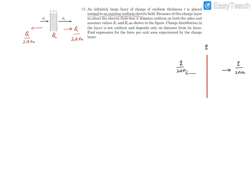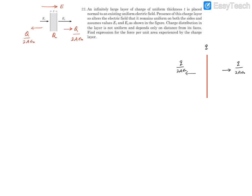There is also an externally existing uniform field, such that the resultant field on both sides comes out to be E2 and E1 respectively. The external uniform field must be directed in this direction. The fields due to the charge layer combine with this external field, and we can write: E + Q/(2Aε₀) = E2 on one side, and E − Q/(2Aε₀) = E1 on the other side.